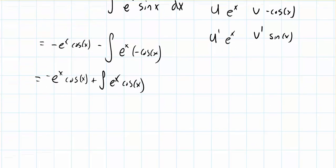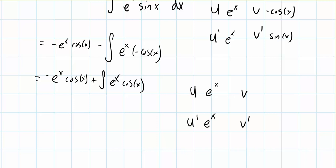Now we do that again and come up with some new u and v prime variables. u will again be e to the x, making u prime e to the x. v prime will be cosine x, making v sine x.